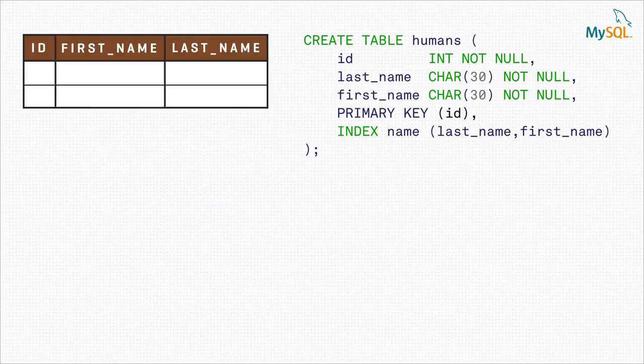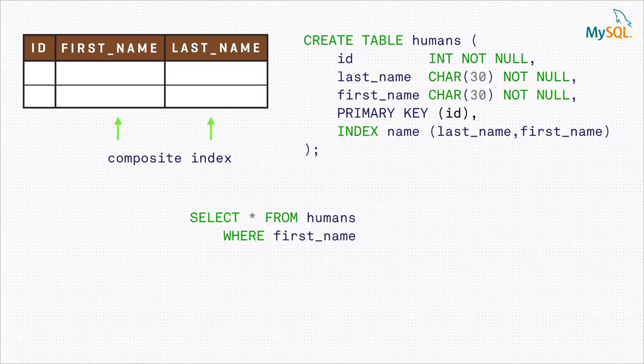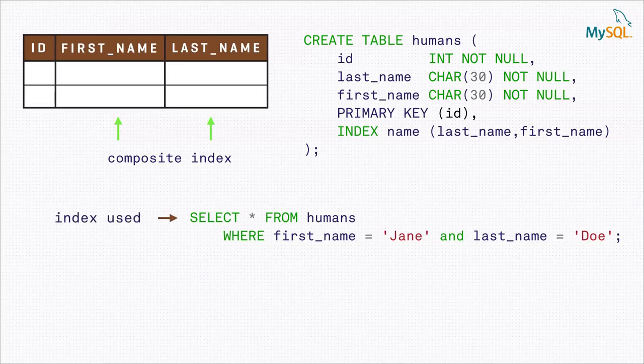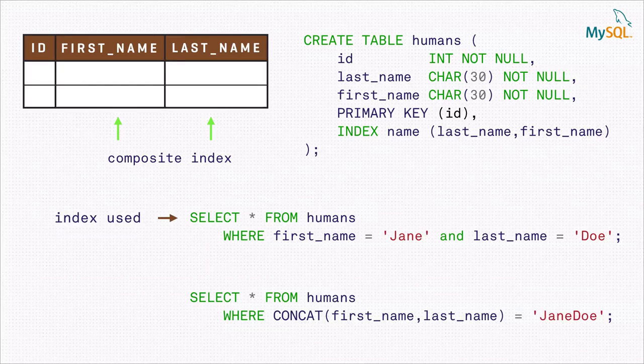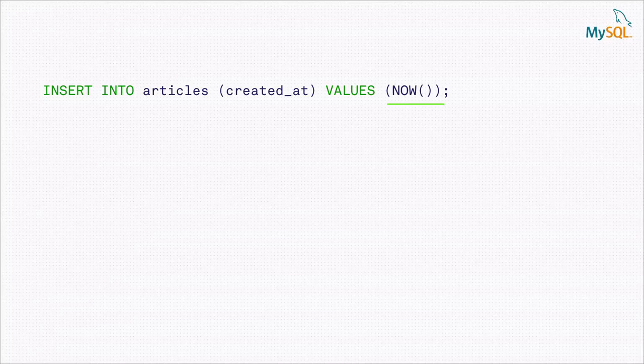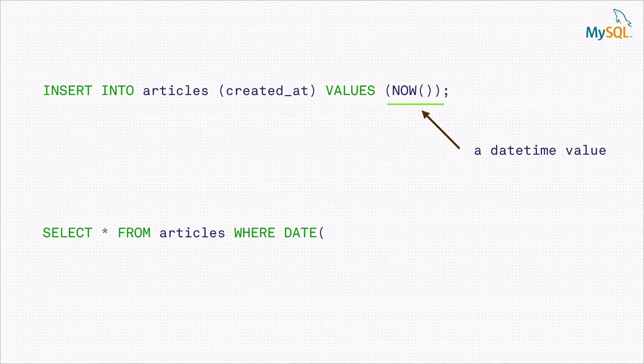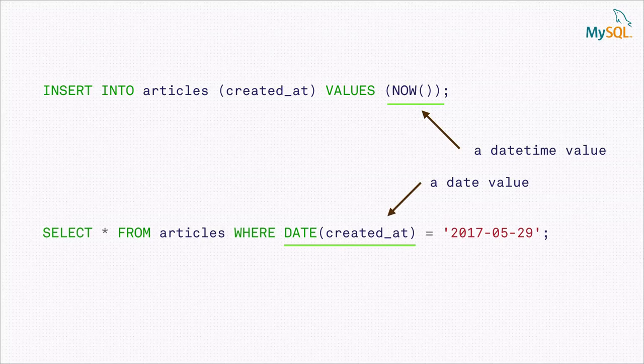We can also use this knowledge to look more closely at what we're indexing versus what we're searching for. For example, if we have a composite index on first name and last name, searching for a concatenation of both will not hit the index. Or if we're indexing a datetime field but are searching for entries using only the date part, we will also not hit the index — every entry has to be transformed before comparison.